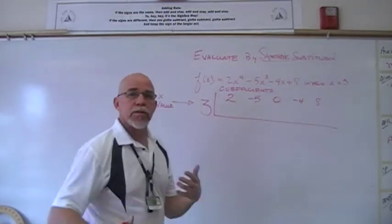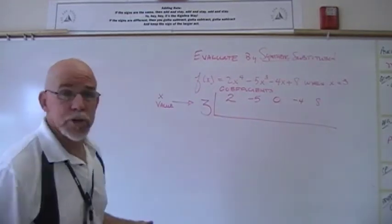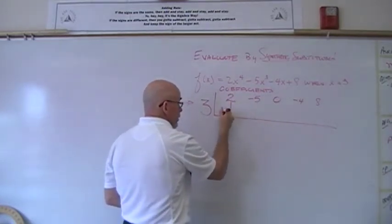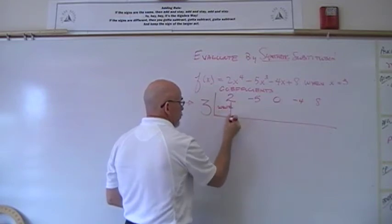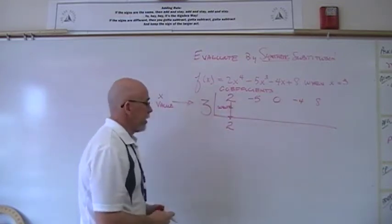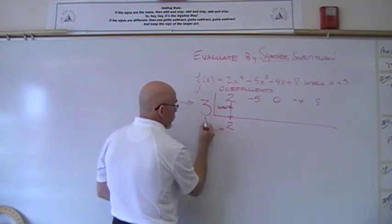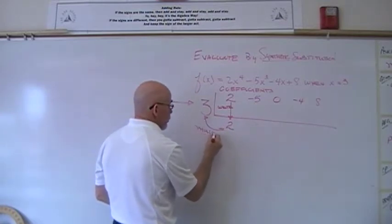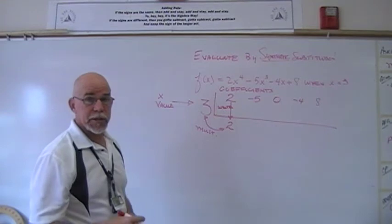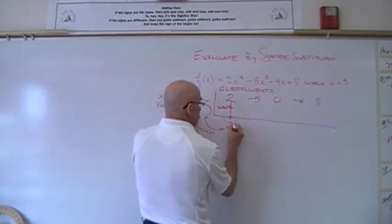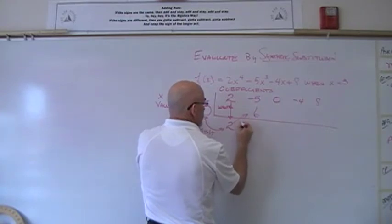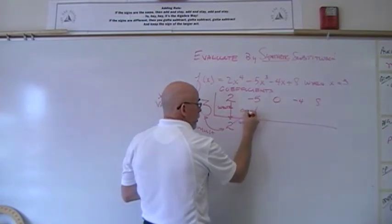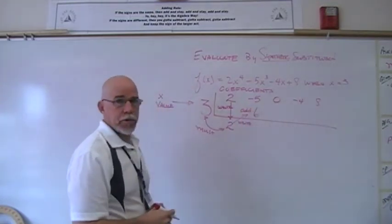Now here's the process of synthetic substitution method. First thing we do is write that leading coefficient underneath that line. Then we multiply the 3 and the 2, the x value and the leading coefficient. In this case, 3 times 2 is 6.